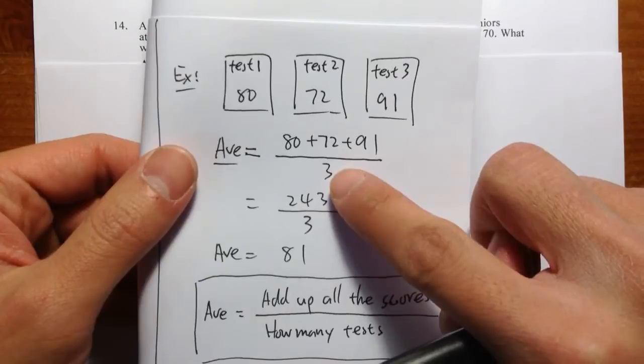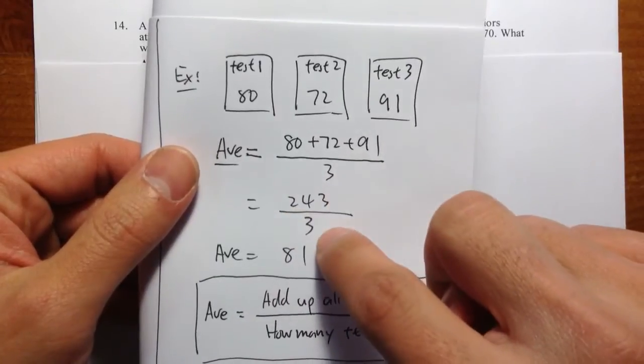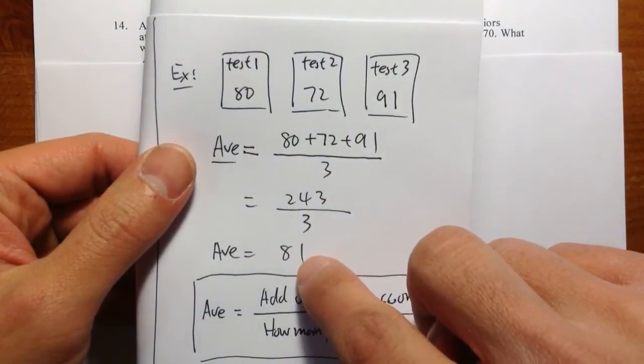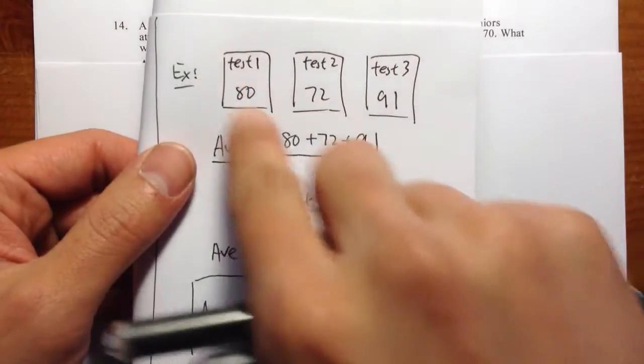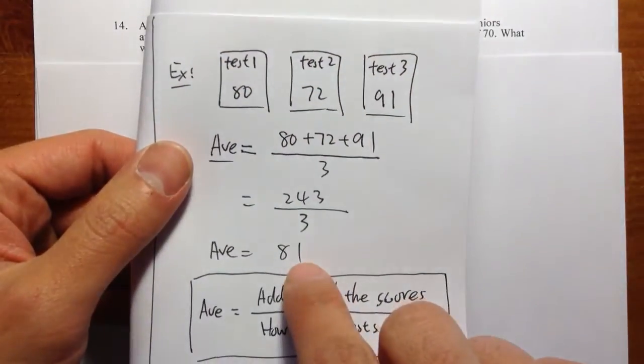And then you would divide by how many tests that you took, which is 3. 243 divided by 3 is 81. So we can say that the average of these 3 tests is 81.